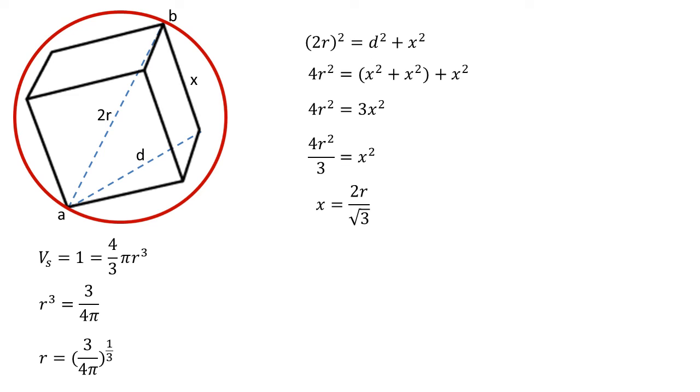But we've already worked out what r is, so let's substitute that in. We get that x equals (2/√3) × (3/(4π))^(1/3).